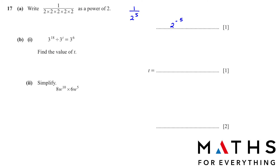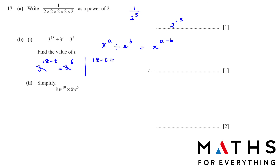In part b, find the value of t. Using the indices rule: x to the power of a divided by x to the power of b equals x to the power of (a minus b). So we write 3 to the power of (18 minus t) equals 3 to the power of 6. Since the bases are the same, they cancel and we get 18 minus t equals 6. Rearranging: t equals 18 minus 6, so t equals 12.